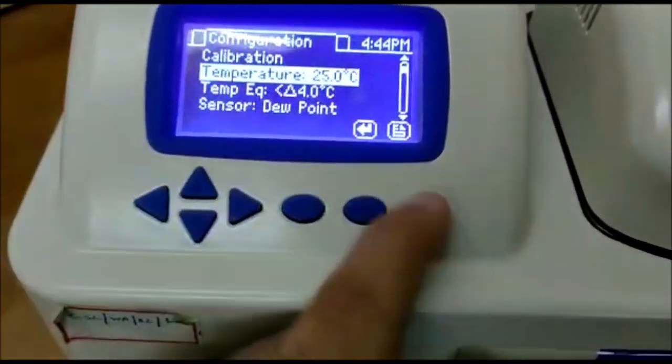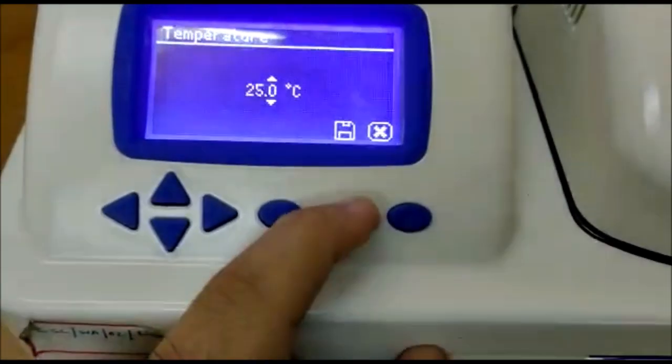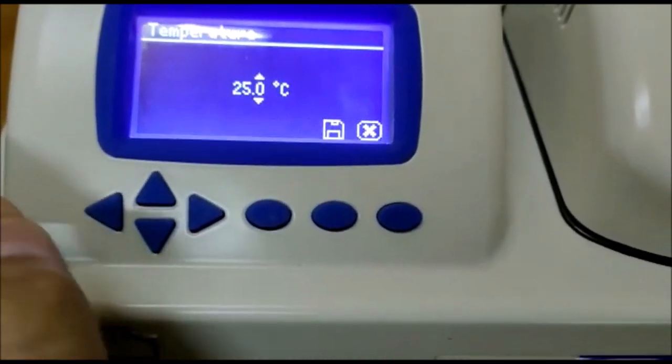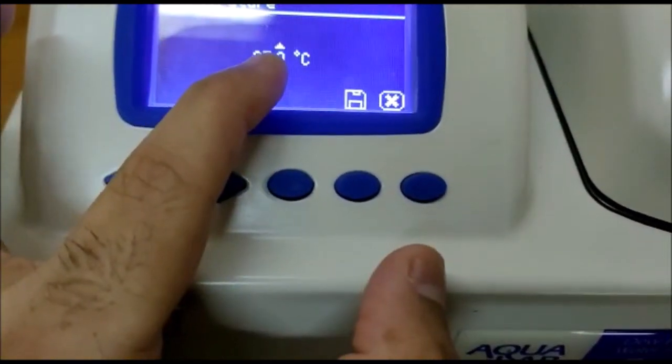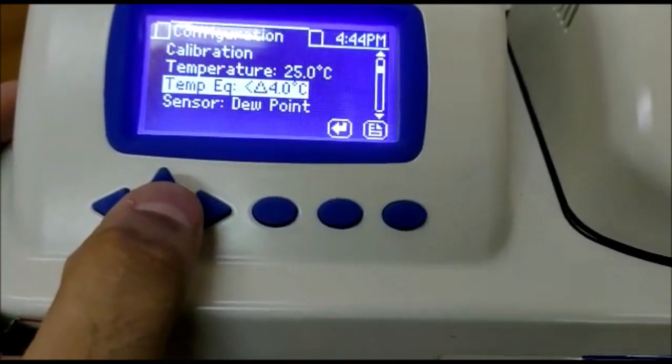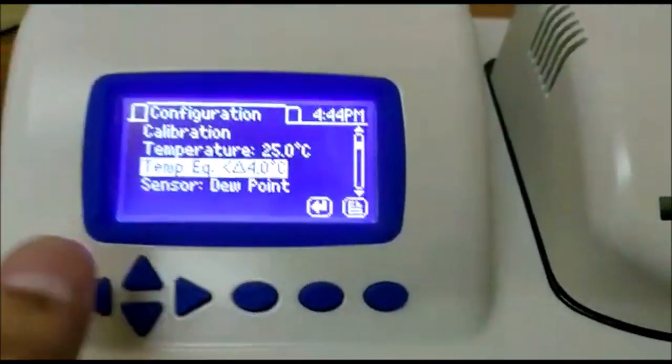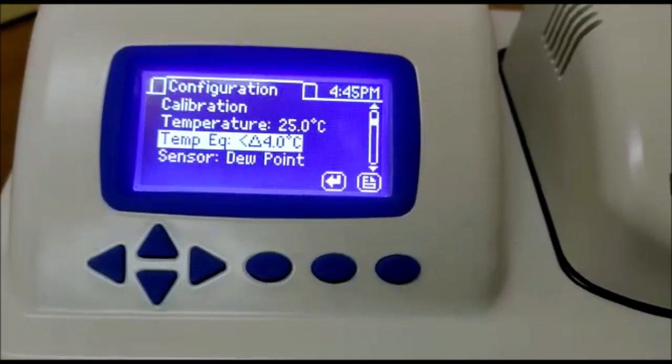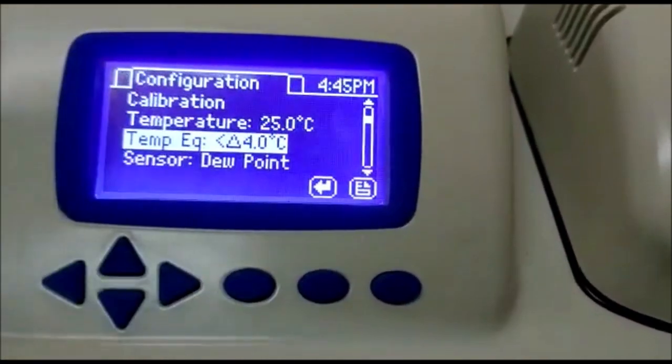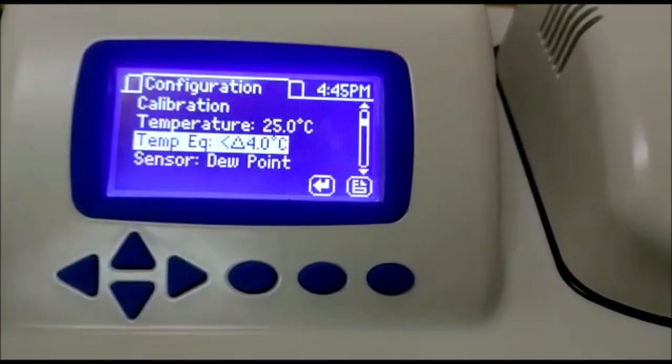Aqualab 4TE has a feature to change the temperature. By default it is set at 25 degree centigrade which is more or less ambient here. And you can change this value from 15 degree centigrade to 50 degree centigrade in gradations of 0.1. Here we have temperature equivalence which is right now showing less than delta 4 degree centigrade. It means it can detect if either the sample is hot or cool with the temperature we have set. Right now this instrument at temperature 25 degree centigrade will measure the sample which has a temperature up to 29 or 21. It means plus 4 or minus 4.